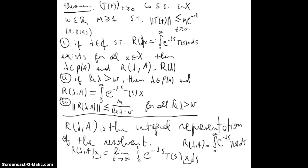We're going to prove this theorem. Let's start with the first one: if lambda is a complex number, we have the definition of R_lambda(x), that x maps to x, and then lambda will be in the resolvent set of A. Recall that R_lambda(A) is equal to A minus lambda I, inverse of A minus lambda I. So we want to prove that.